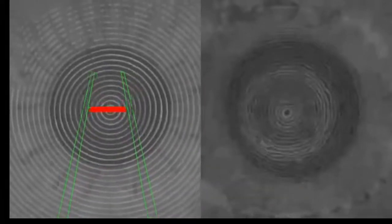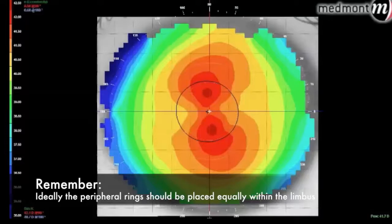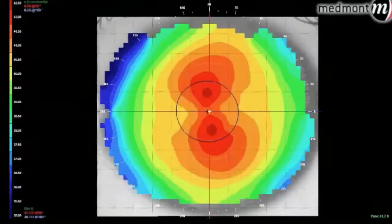Once we have achieved an ideal capture, we need to alter the color scale to best match the data. This allows us to better see detail of the captured data. This can be done in Medmont by manipulating the custom scale.